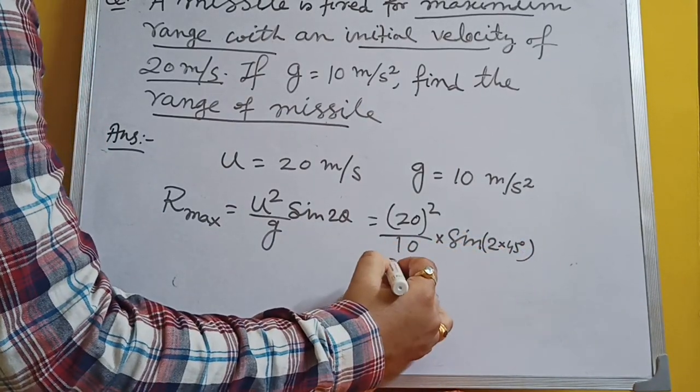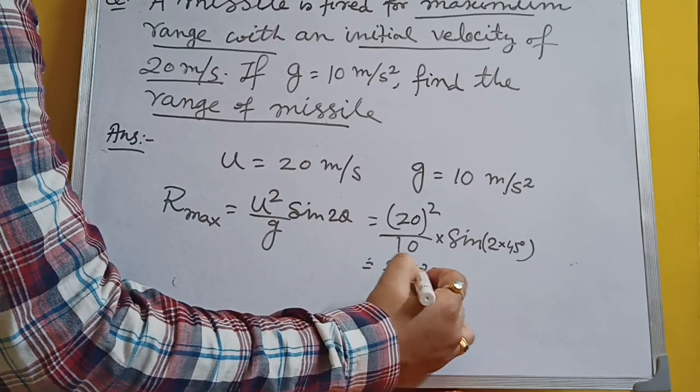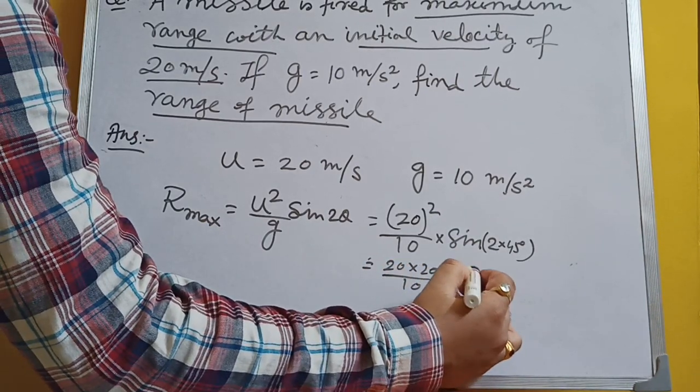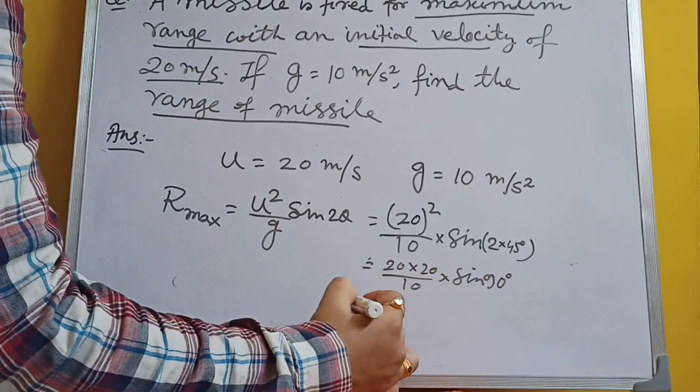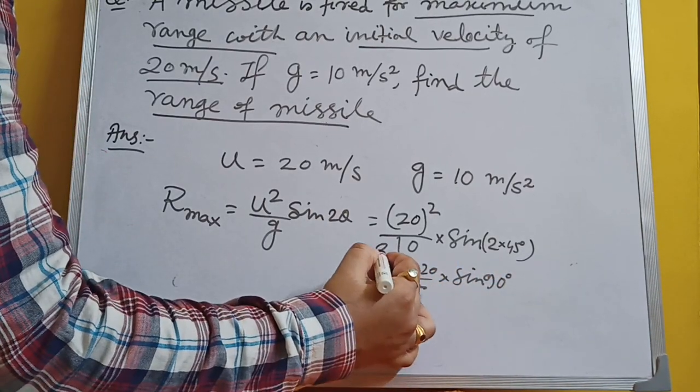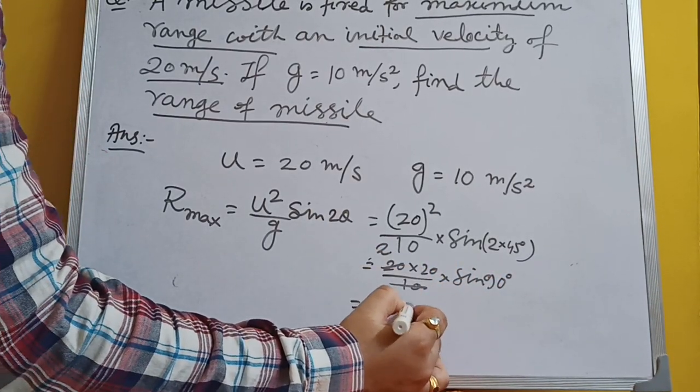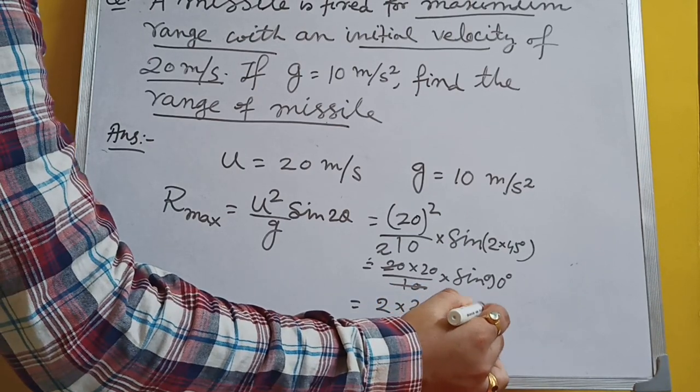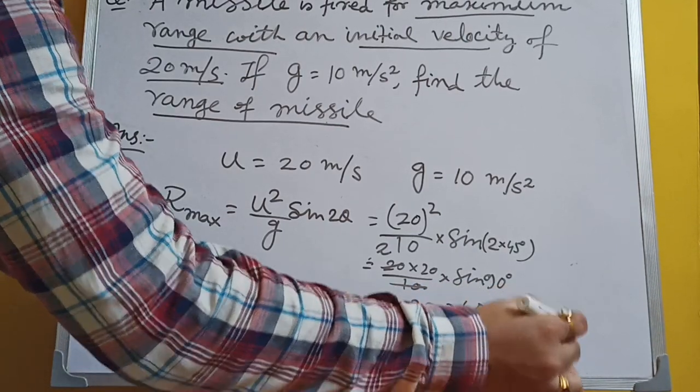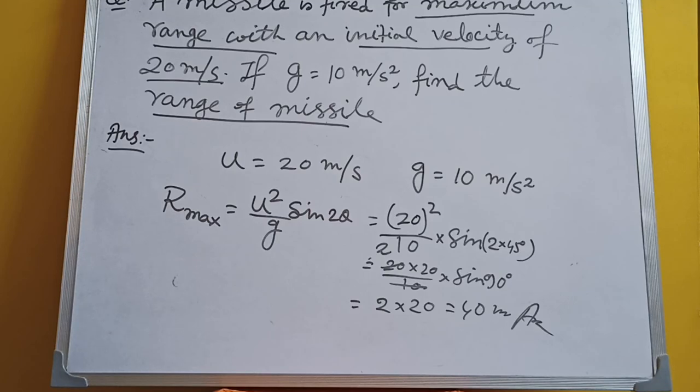That is 20 into 20 by 10 into sin 90 degrees. We know the value of sin 90 degrees is equal to 1. 2 into 20, that is 40 meters. Thank you.